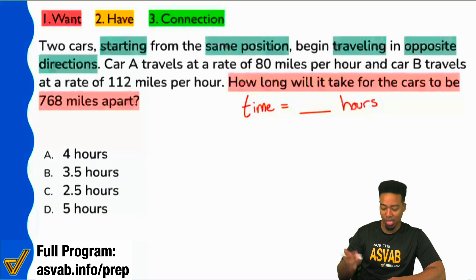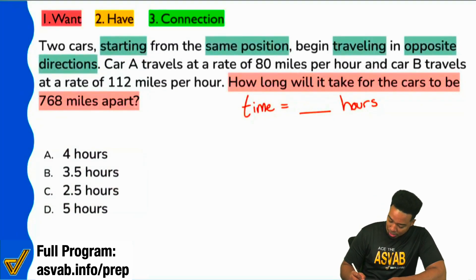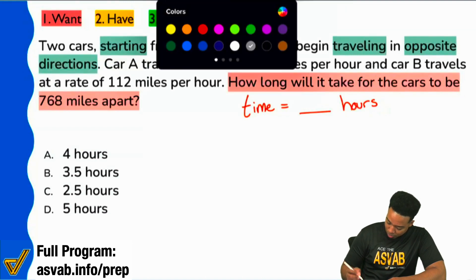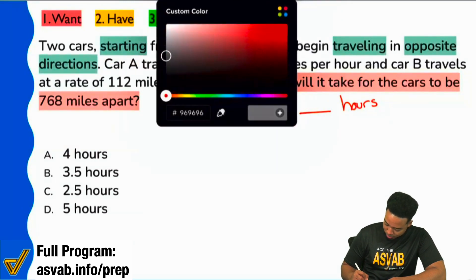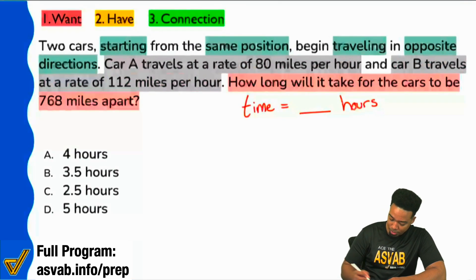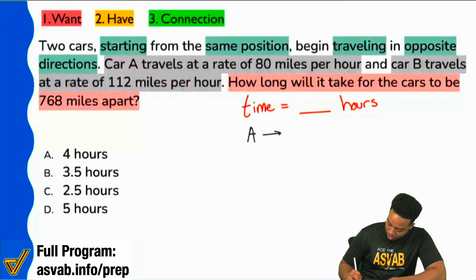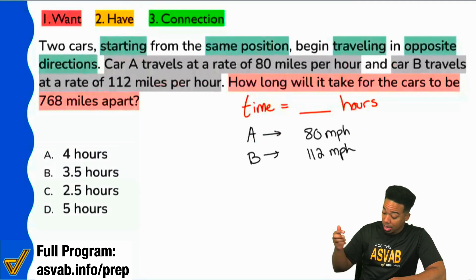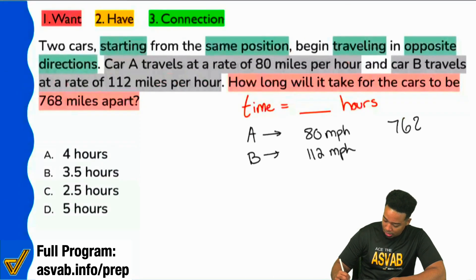We'll definitely want to write these values down. Let's go ahead and do so. So we see that car A, 80 miles per hour, car B, 112 miles per hour, and then lastly we have 768 miles apart.